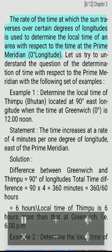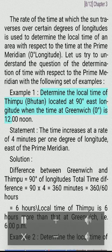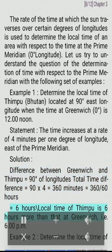The rate at which the sun traverses over certain degrees of longitudes is used to determine the local time of an area with respect to the time at the prime meridian, zero degrees longitude. Example 1: Determine the local time of Thimpu, Bhutan, located at 90 degrees east longitude when the time at Greenwich, 0 degrees, is 12:00 noon. The time increases at a rate of 4 minutes per 1 degree of longitude east of the prime meridian. Solution: Difference between Greenwich and Thimpu equals 90 degrees of longitudes. Total time difference equals 90 × 4 = 360 minutes = 360/60 hours = 6 hours. Local time of Thimpu is 6 hours more than that at Greenwich, i.e., 6:00 p.m.